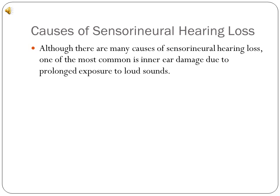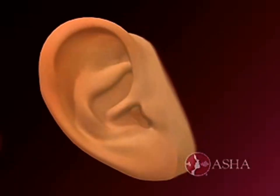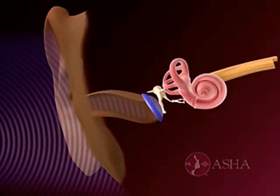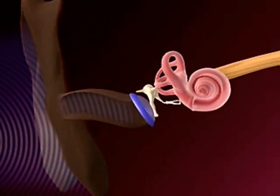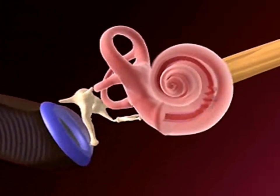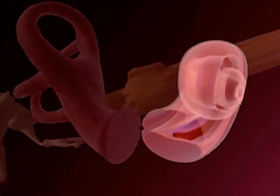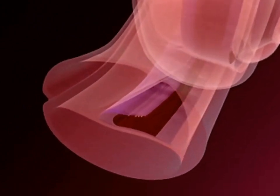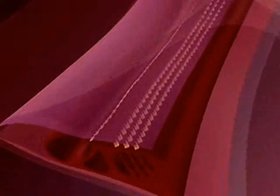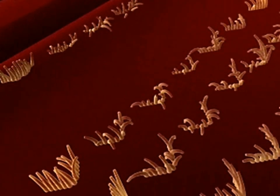Although there are many causes of sensory neural hearing loss, one of the most common is inner ear damage due to prolonged exposure to loud sounds. Powerful sound waves enter the ear, vibrating the eardrum and causing the ossicles to beat against the oval window of the labyrinth. This creates tiny waves in the perilymph and endolymph fluids. If the sound gets too loud, the waves get too powerful, damaging the sensitive hair cells upon which your hearing depends. Sensory neural hearing loss is irreversible.